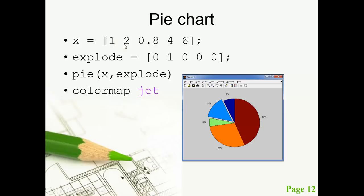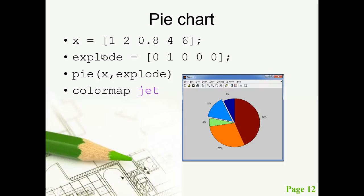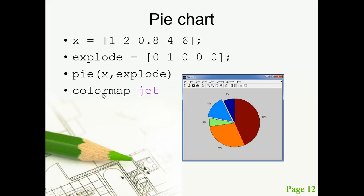The second area will be 2 divided by the sum of all values, times 100. So 'pie(x, explode)' will indicate the pie colors here.